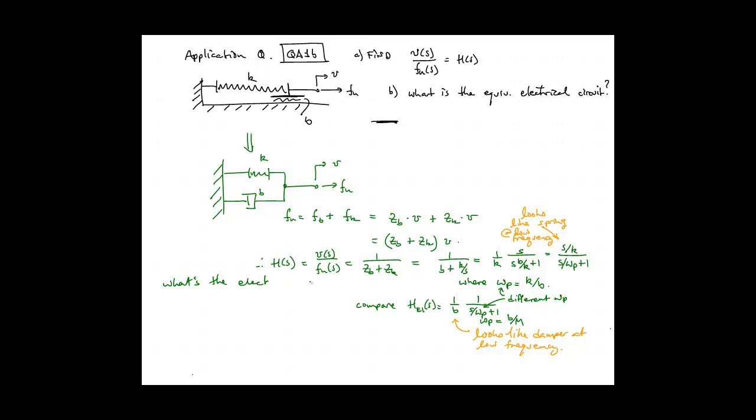The last part to this application problem is to find the electrical analog. So we replace the spring with the capacitor, the viscous damper with the resistor, and the external force with a voltage source. Because it's a common effort configuration, these three elements are going to be in series, and we arrive at our very familiar RC filter.